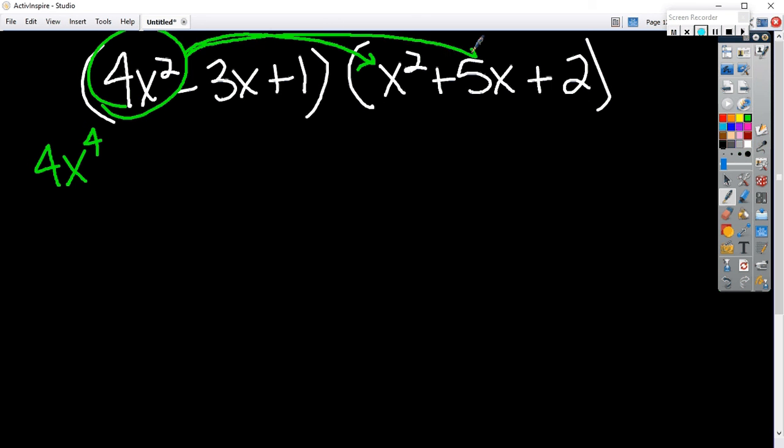So, 4x squared times 5x is 20x to the third. 4x squared times 2 is 8x squared. I'm done with this one. Add the exponents. When you multiply, you add the exponents.